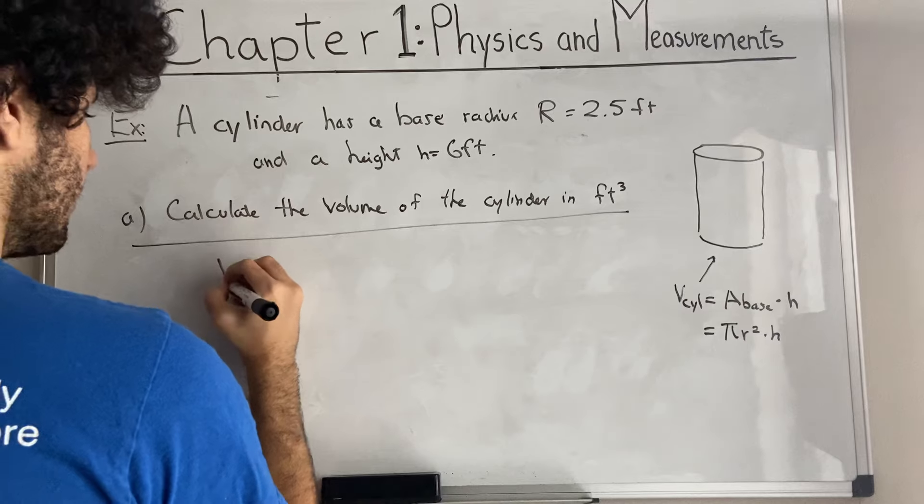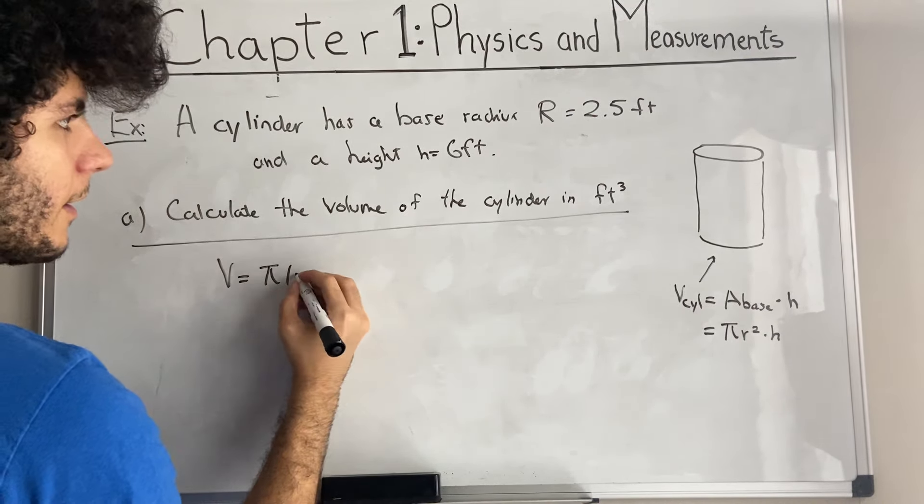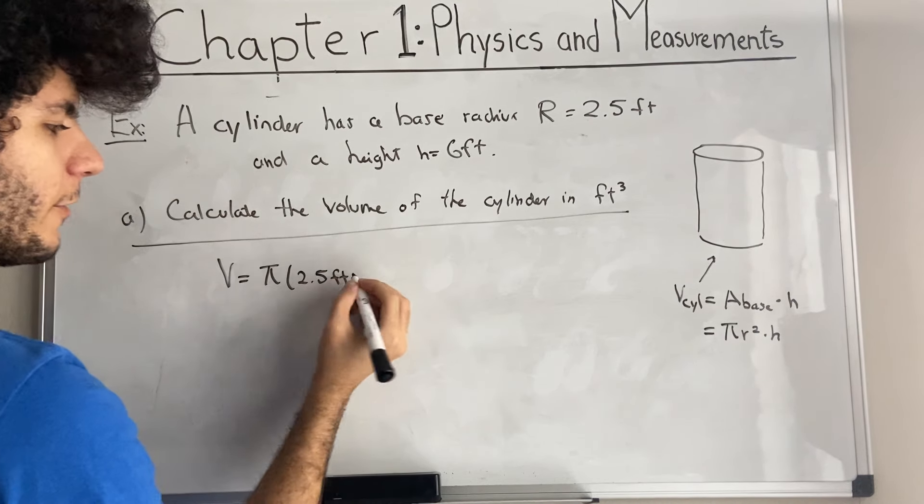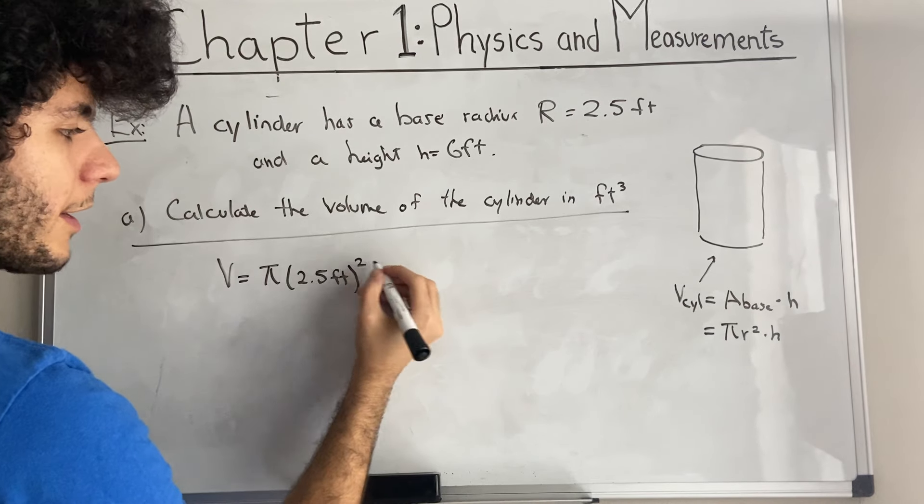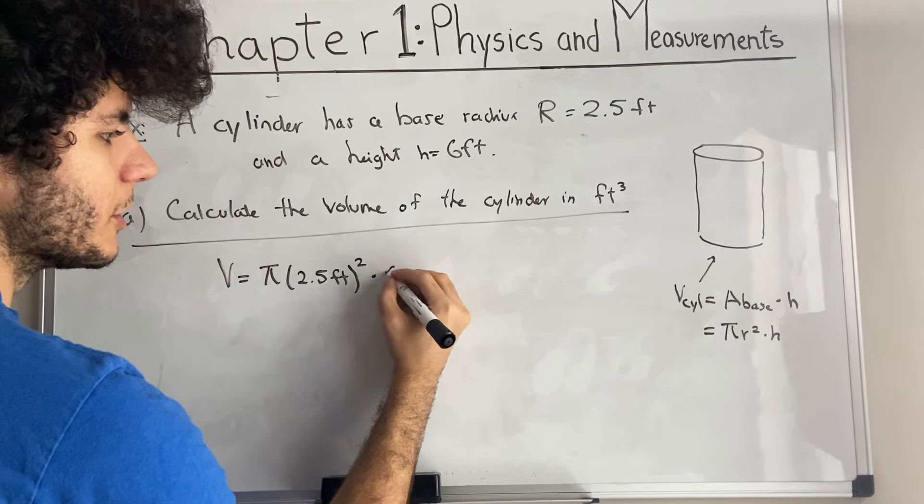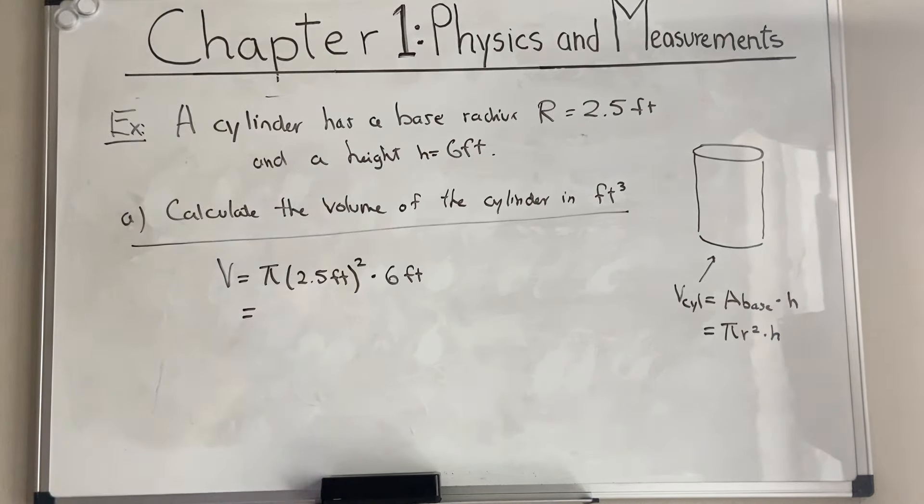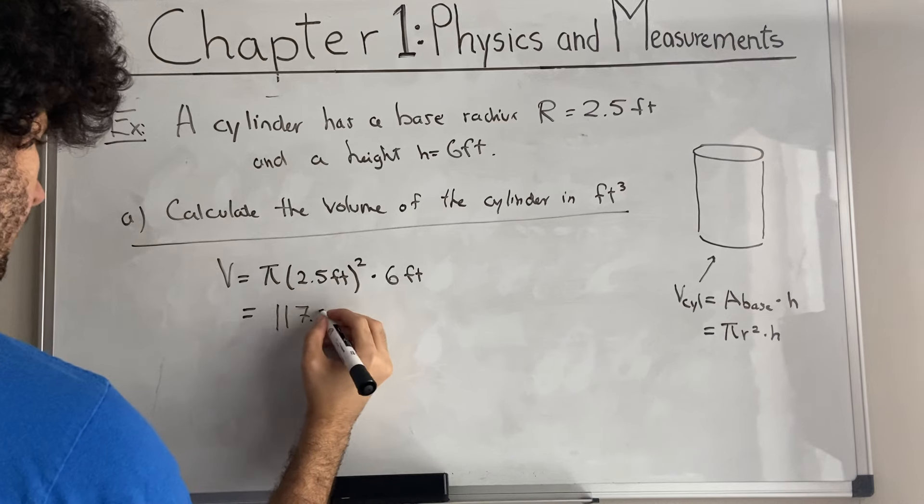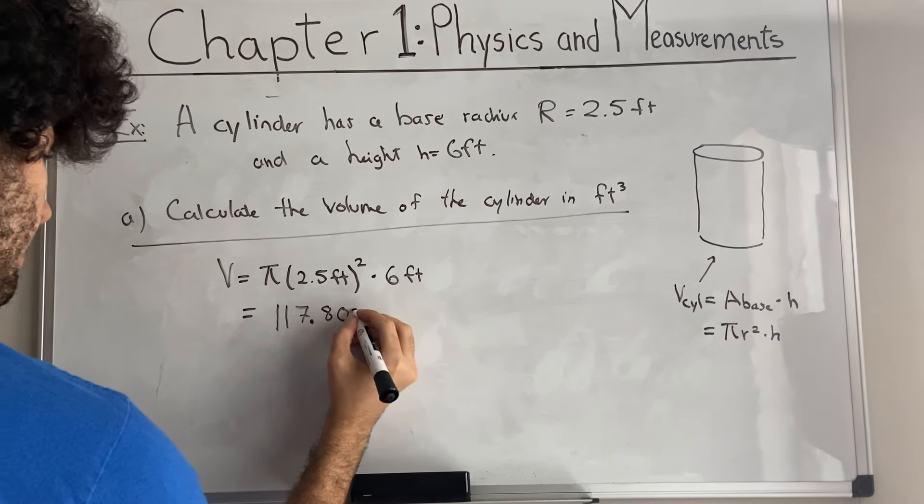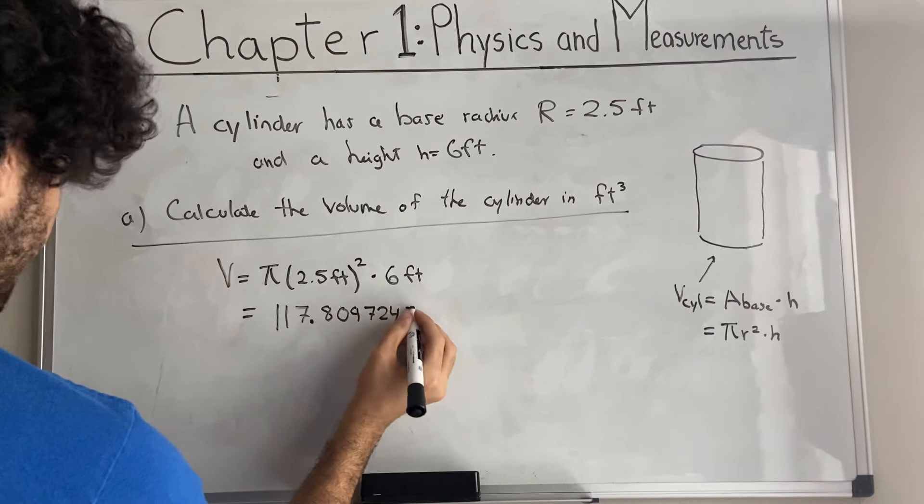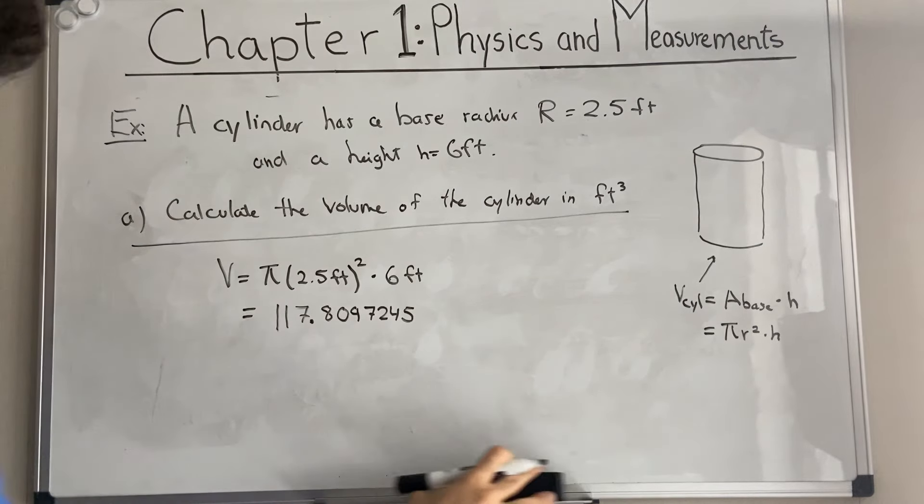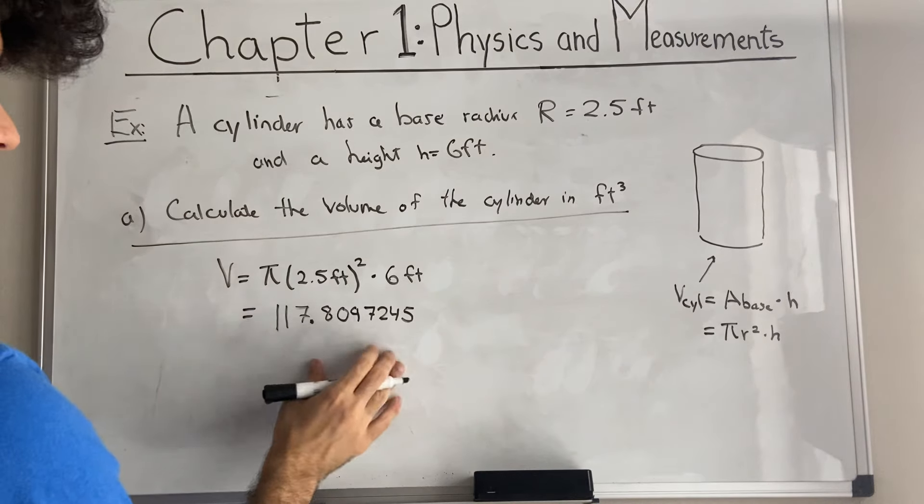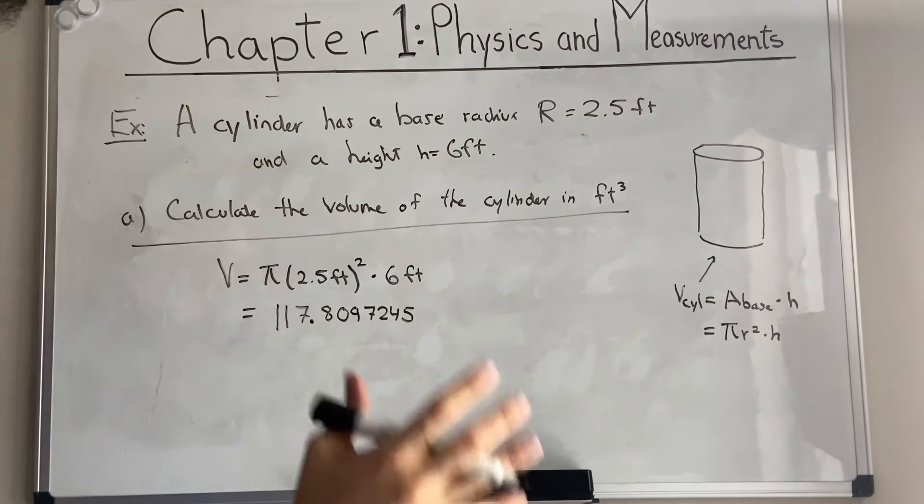Pi times R, which is 2.5 feet, squared times height, which is 6 feet. For this example, I am going to write the units inside the formula. If we plug that really quickly into our calculator, we will see pi times 2.5 squared times 6 is equal to 117.8097245. I added a lot of decimals, which is not necessary. But ask your professor about it. Some professors have different standards. We are not working with significant figures over here. We only work with significant figures in labs.